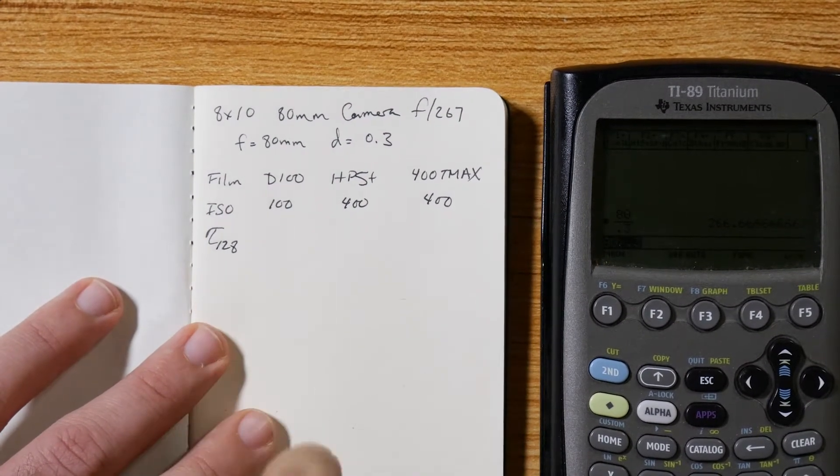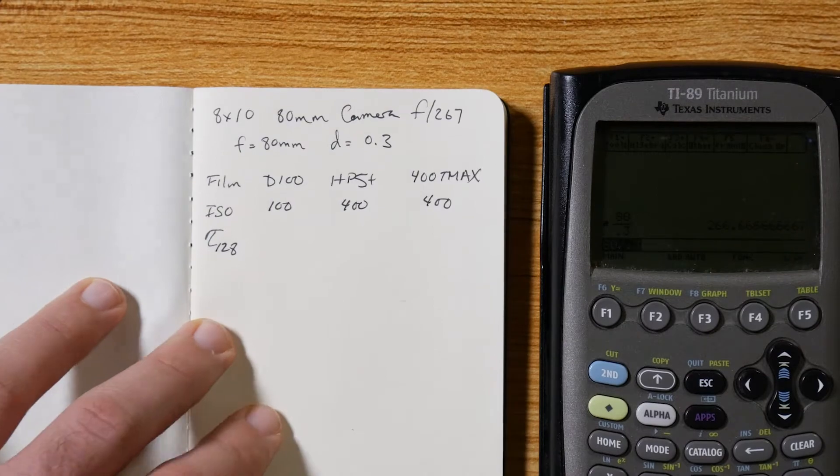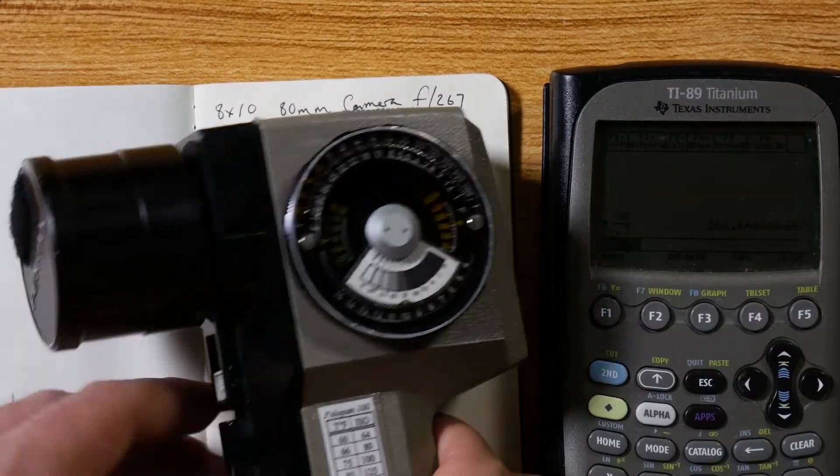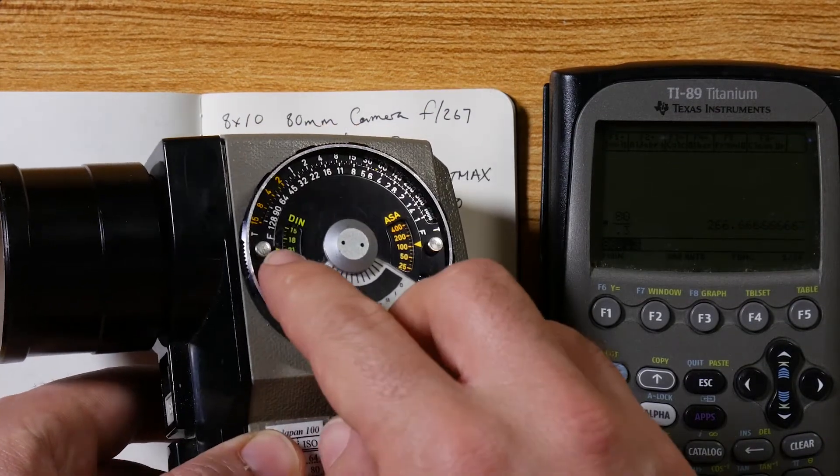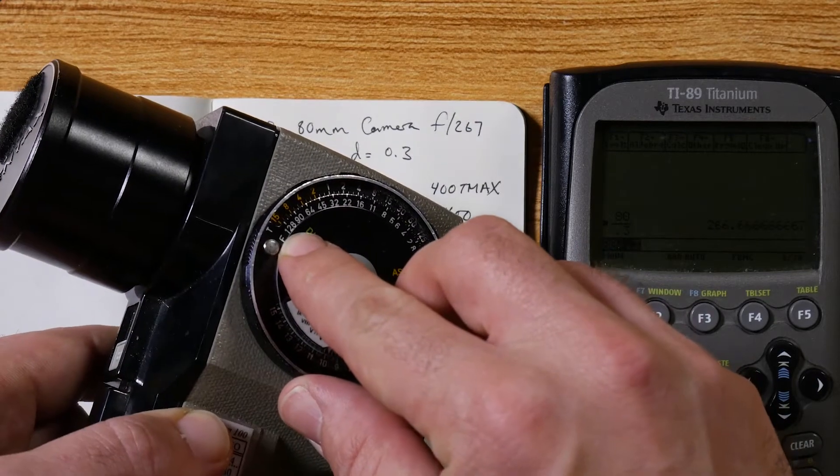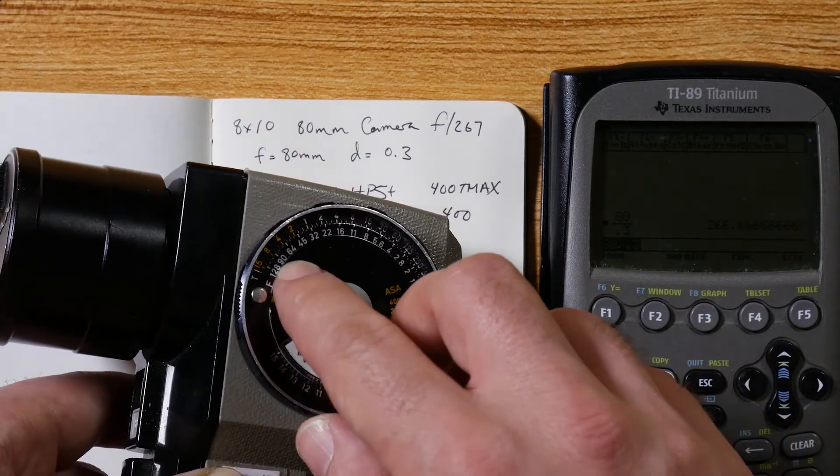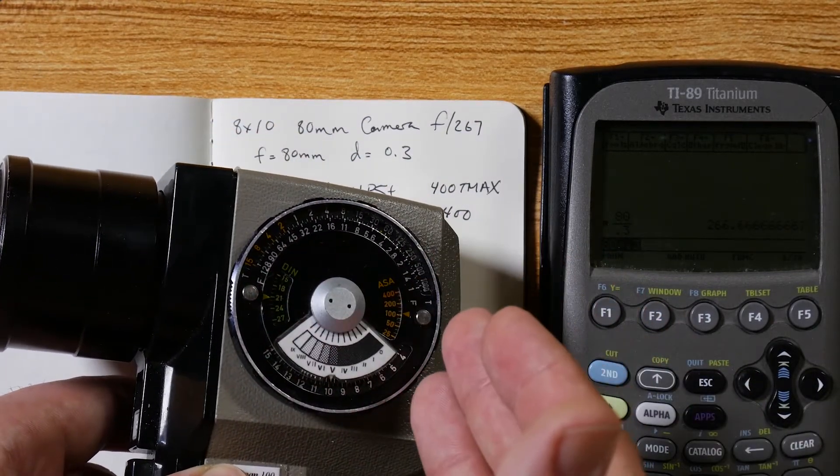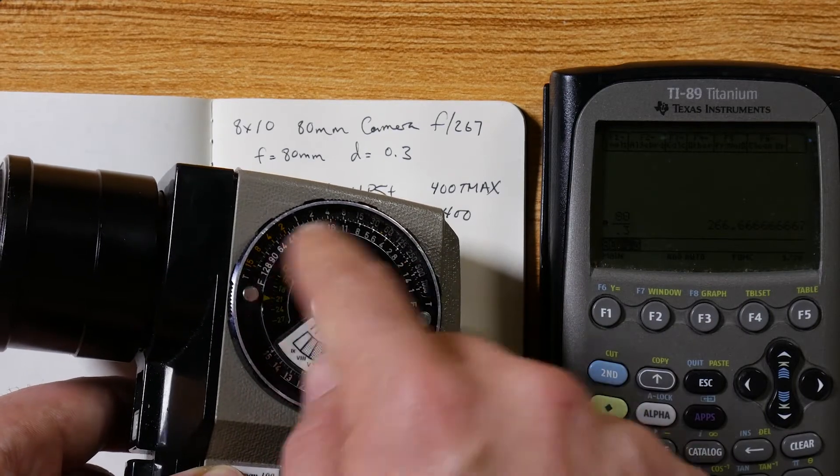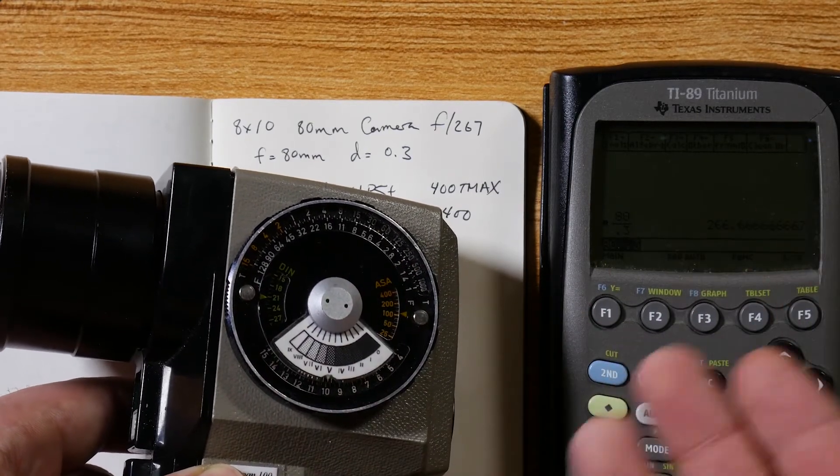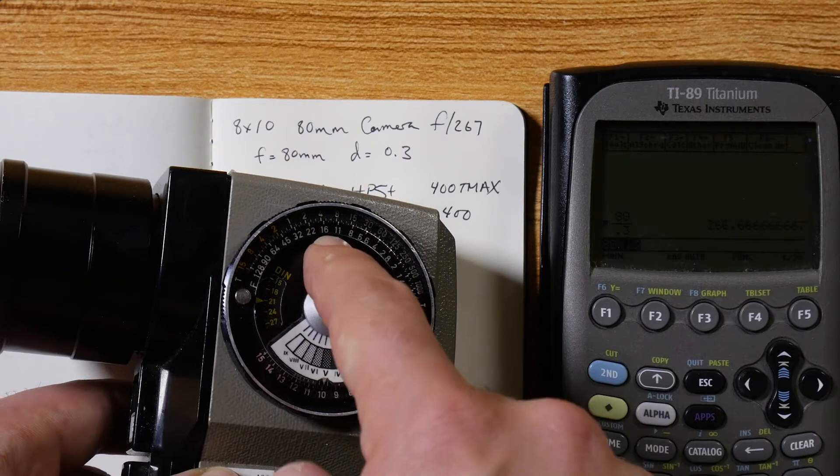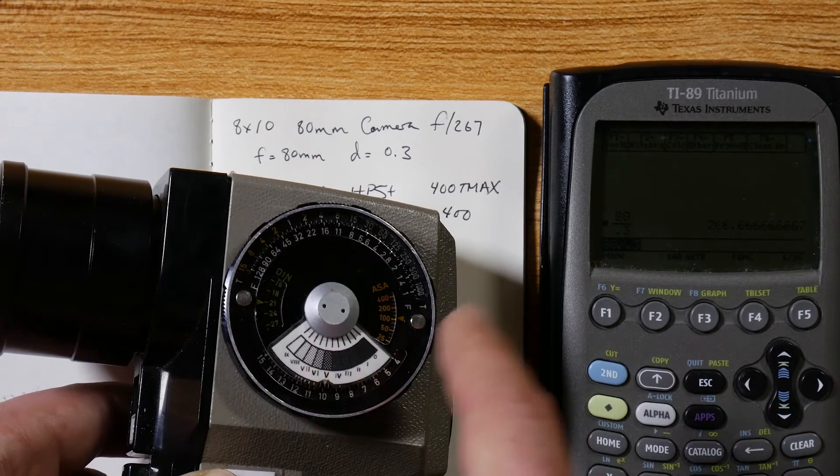Again, you can choose any number you want here, but it depends on your meter. My meter goes up to f/128, so I can use that. If your meter only goes up to 90 or 64, don't pick a number higher than that. Pick a whole f-stop that your meter works within. If using a digital camera, pick something like f/16 which most lenses can go to. Whatever meter you have is going to depend on what that number is.